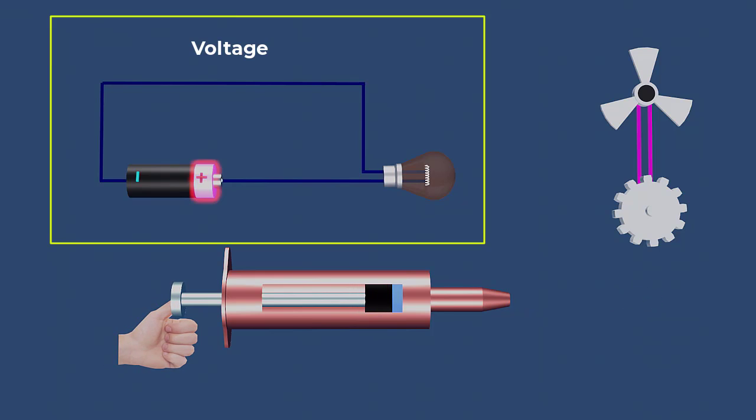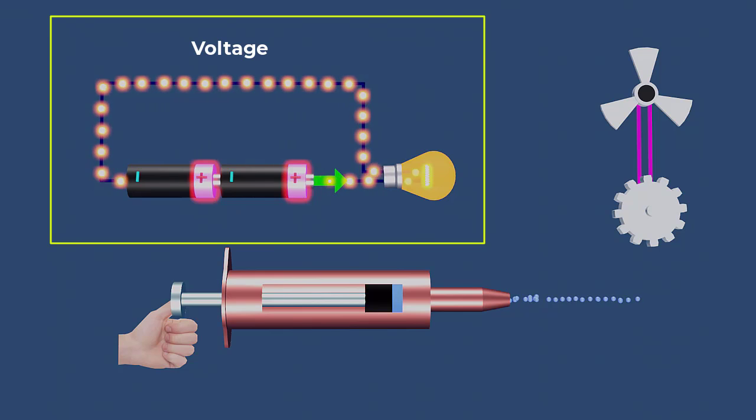Similarly, in an electrical circuit, voltage acts like the electrical pressure that pushes electric charges through a conductor. The higher the voltage, the stronger the push and the higher the flow of charges.